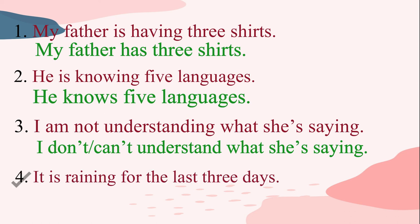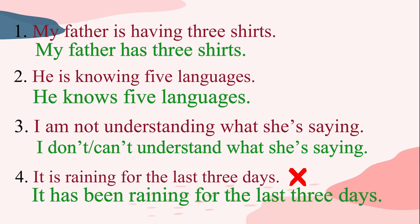The fourth incorrect sentence is 'it is raining for the last three days.' The correct sentence would be 'it has been raining for the last three days.' The reason is that the sentence specifies an action of raining that began at a particular time — three days back. So the correct sentence would be 'it has been raining for the last three days' and not 'it is raining for the last three days.'